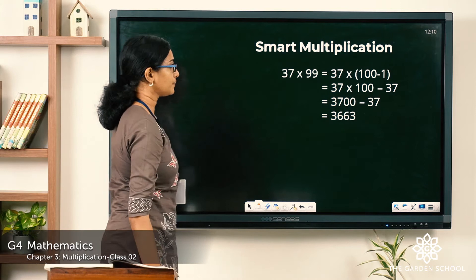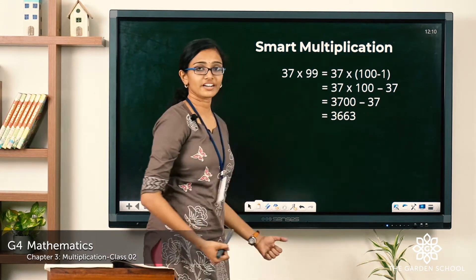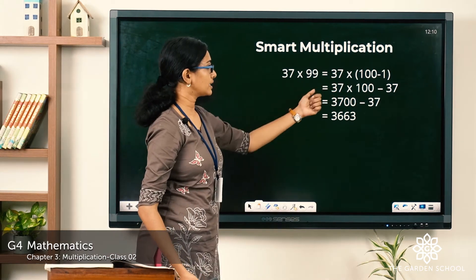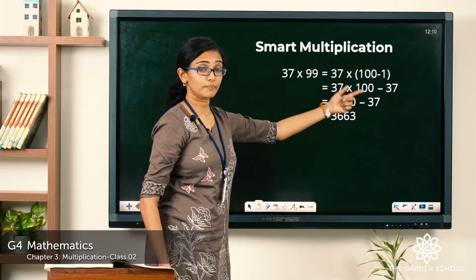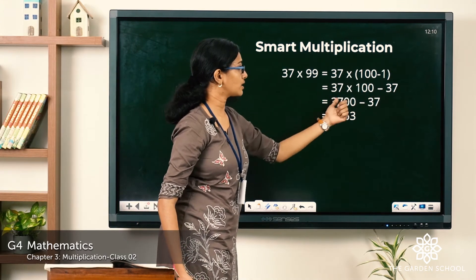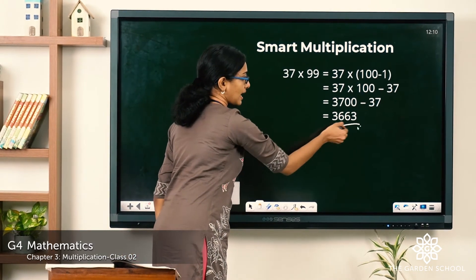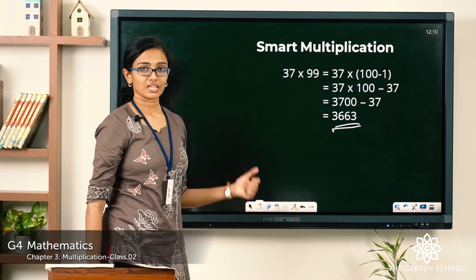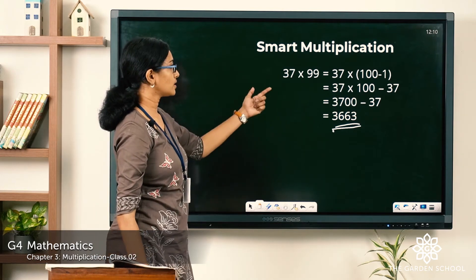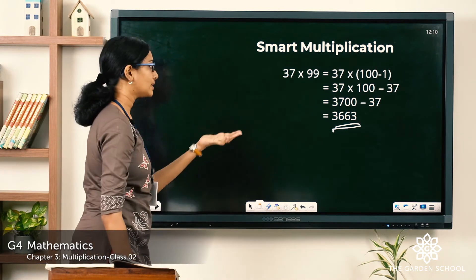So just find out the difference and it will be equal to the product of 37 and 99. These are the steps once again. So 37 into 100 minus 1 which is equal to 99. So 37 into 100 minus 37 into 1 is 3,700 minus 37. Here we have the answer 3,663 which is the product of 37 into 99.